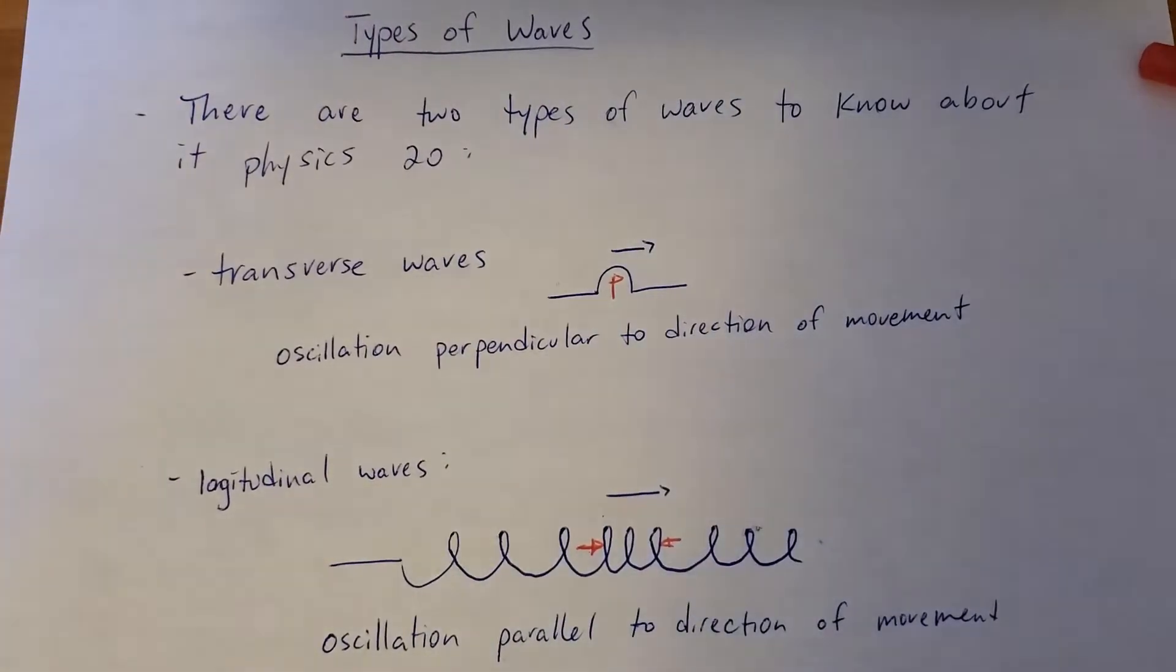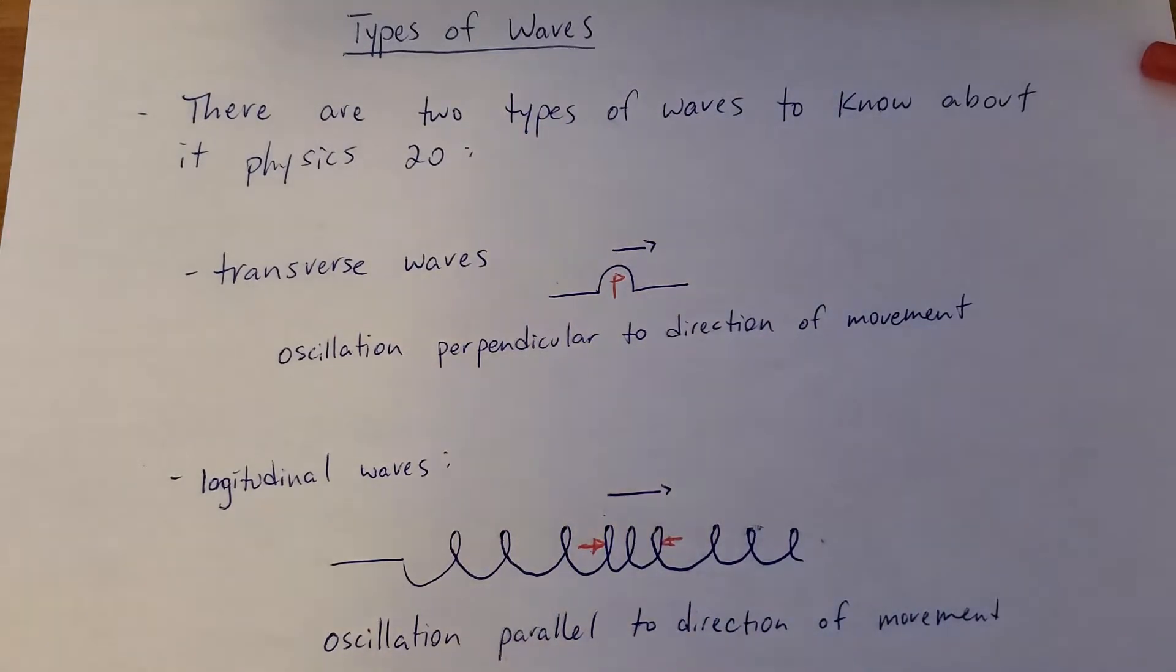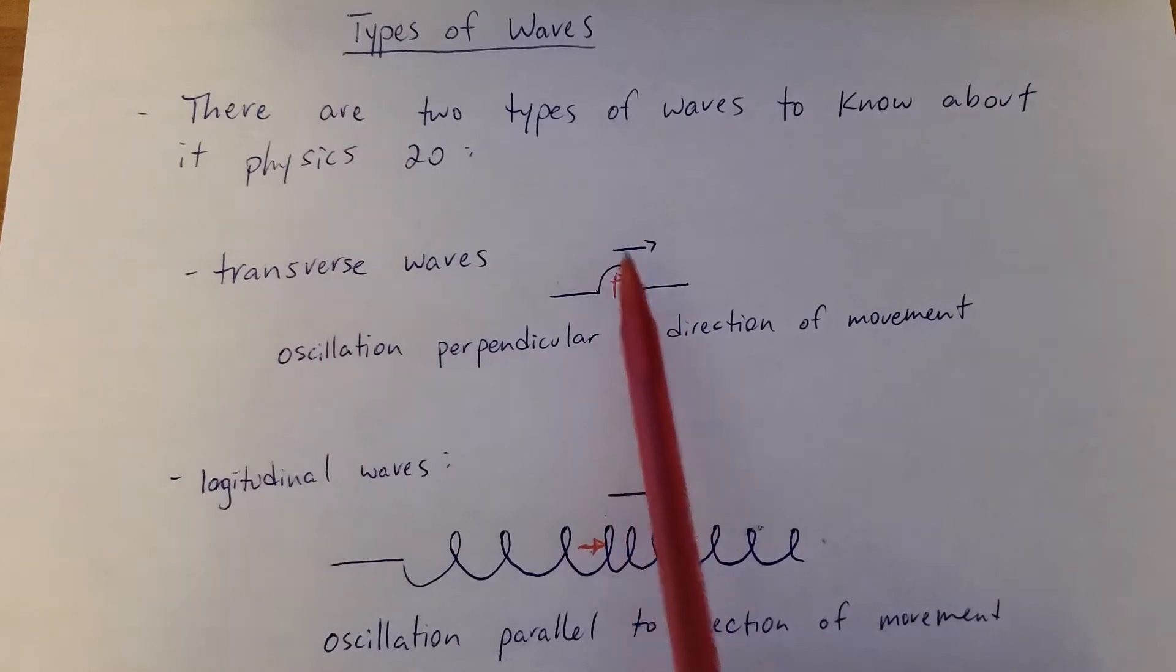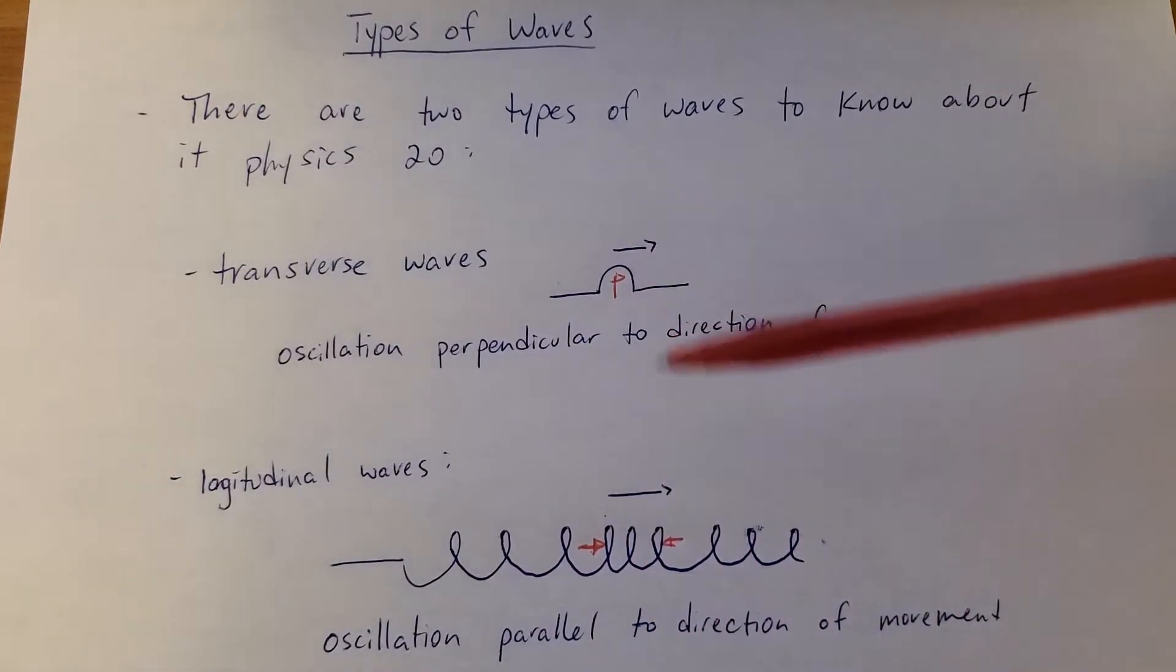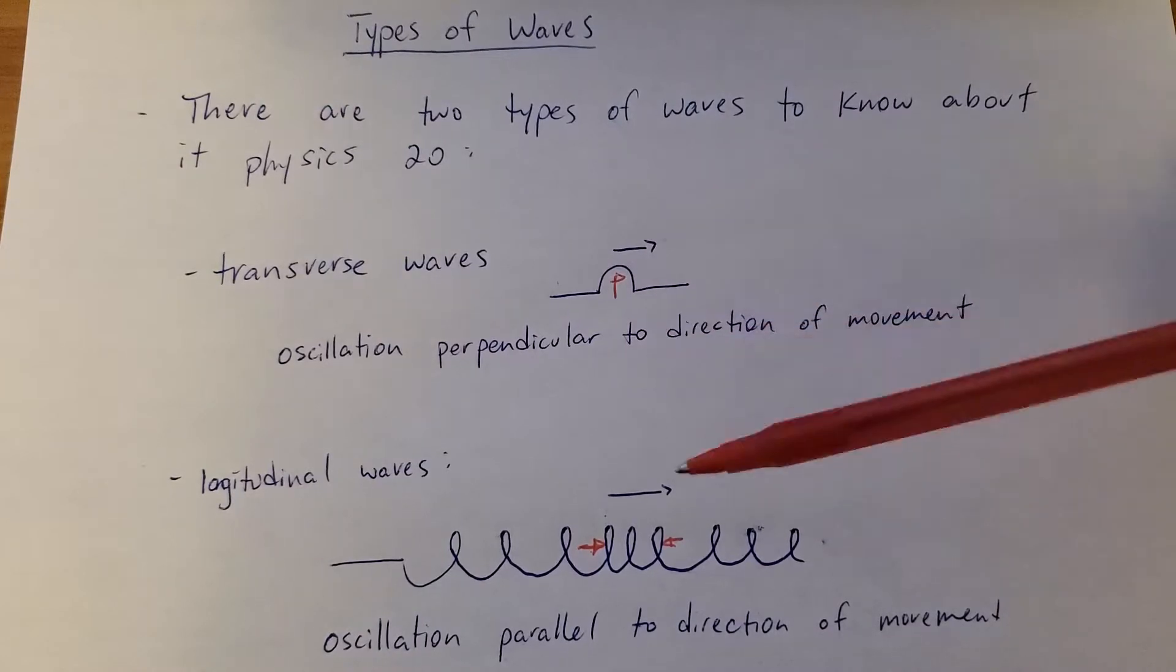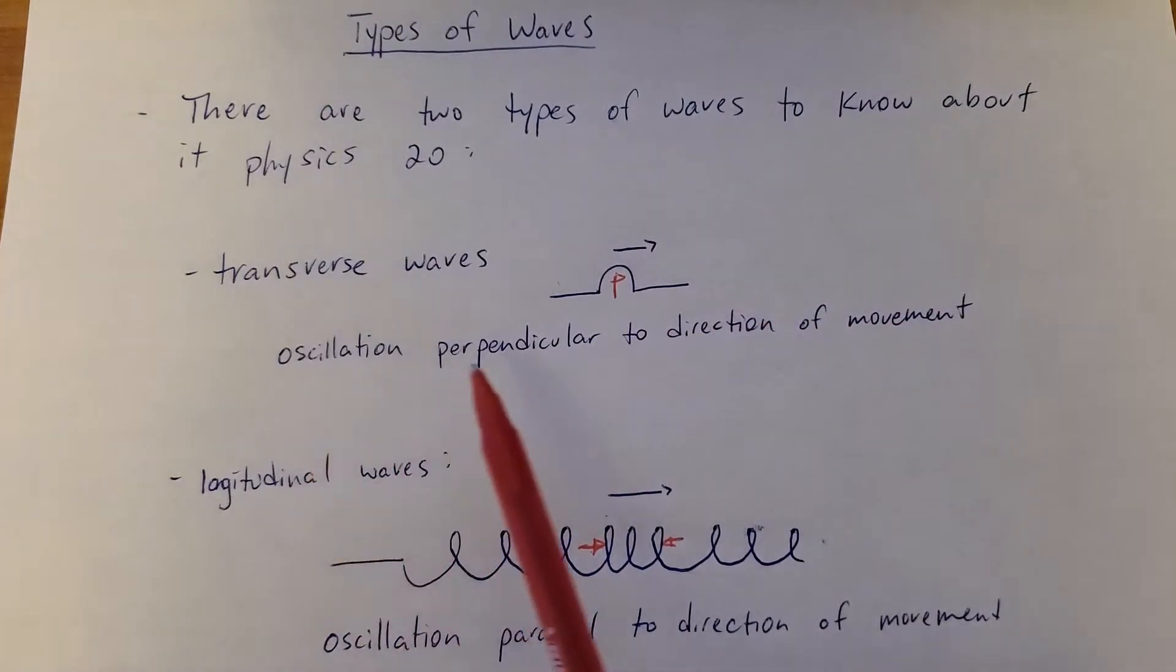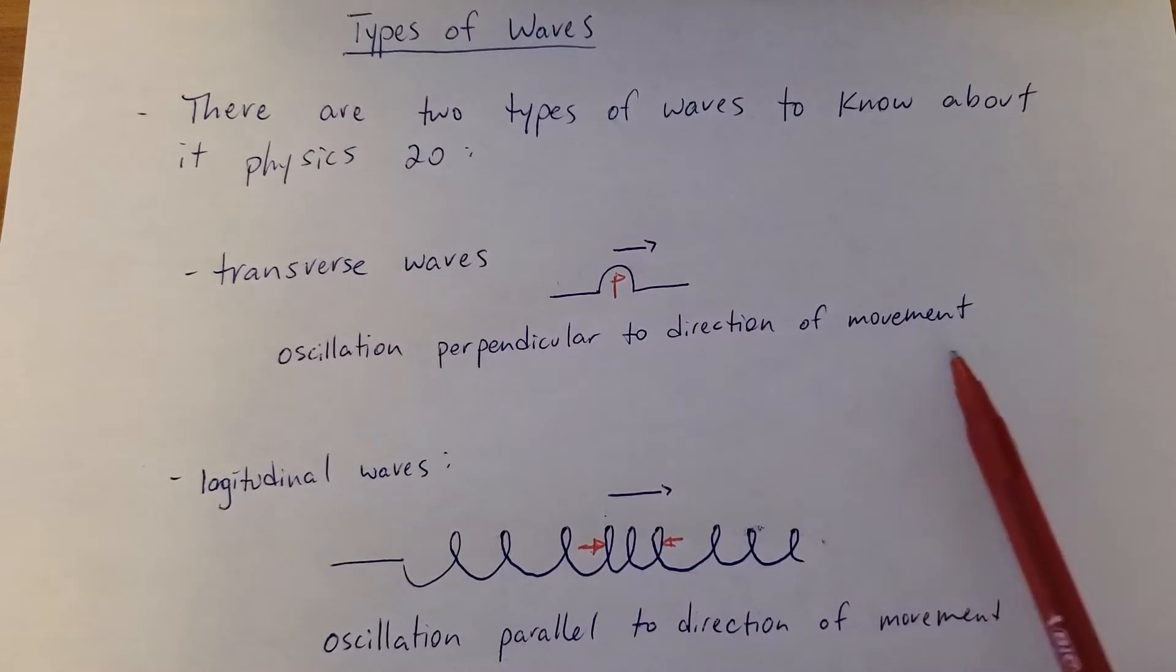The first is transverse waves, which I think is what you picture in your mind when you consider a wave. It's kind of waving up and down. One way we can describe it is if this wave is moving to the right, the oscillations up, or it could be down, or oscillating between up and down more likely. That's an oscillation perpendicular to the direction the wave is traveling.